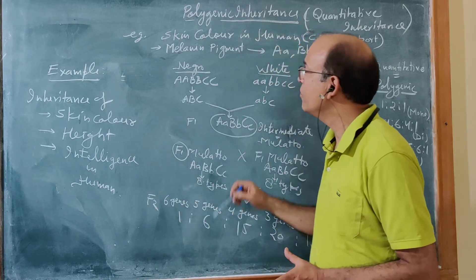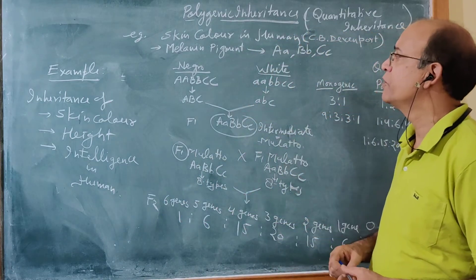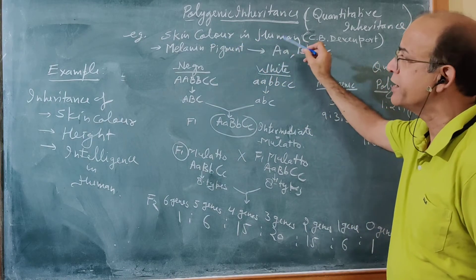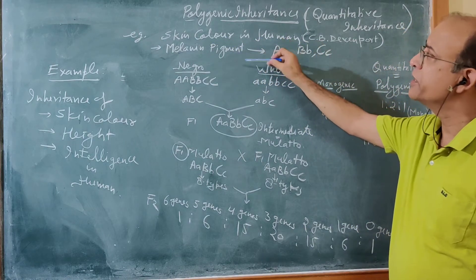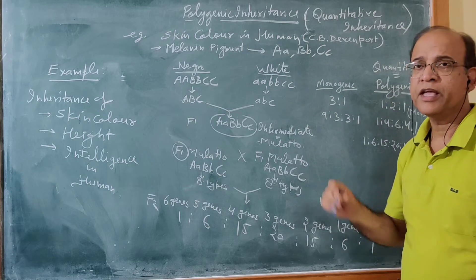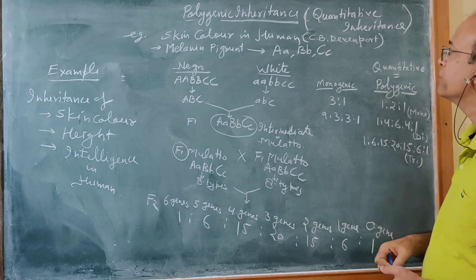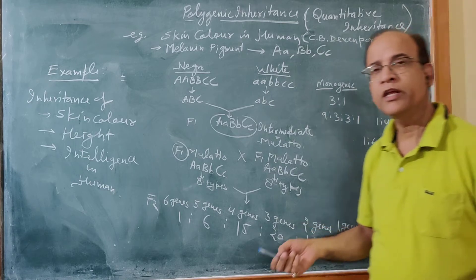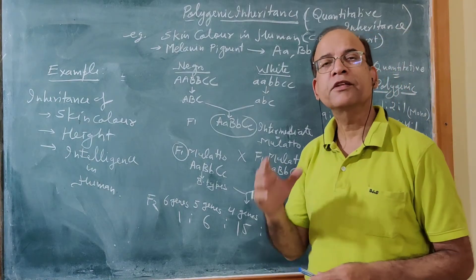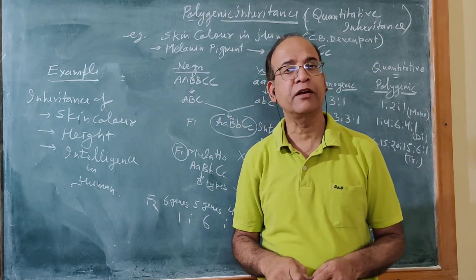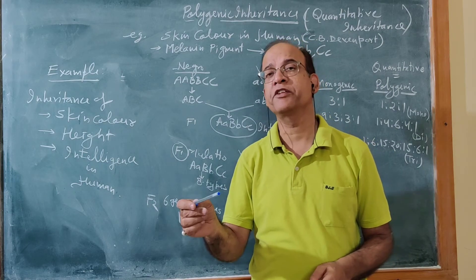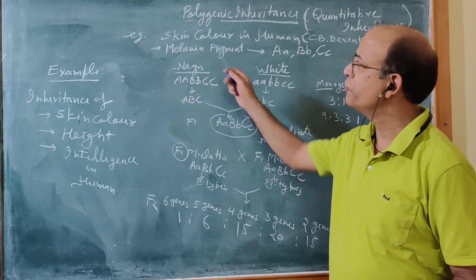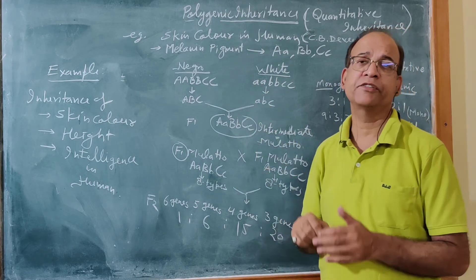Now we will discuss one example of a polygenic character — the inheritance of skin color in humans. This particular inheritance was studied by C.B. Davenport. In human beings, skin color is decided by the pigment melanin. Melanin pigment is responsible for the inheritance of skin color.